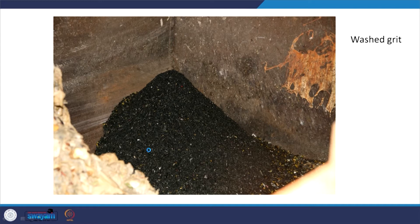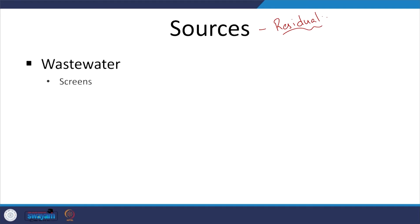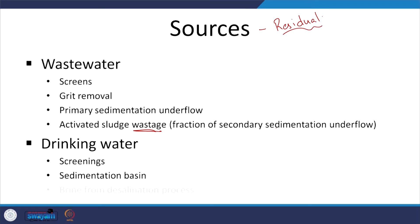You see washed grit and how it looks — but typically this is pretty inert. In general, the sources of various residuals: in wastewater they can come from screens, from grit removal, primary sedimentation tank underflow, activated sludge wastage — in the activated sludge process, some of the sludge is wasted and some is recycled. In drinking water: screenings, sedimentation basin, and brine from the desalination process. These are the aspects that need to be considered when looking at residuals.